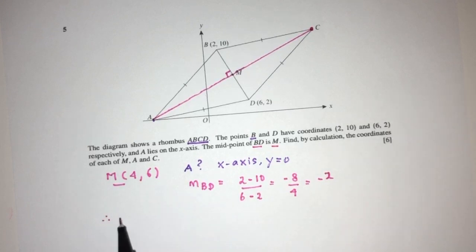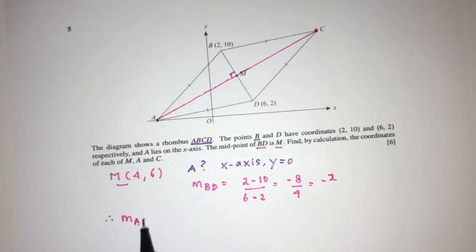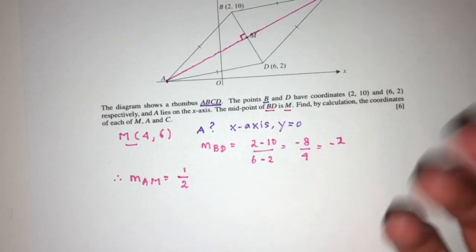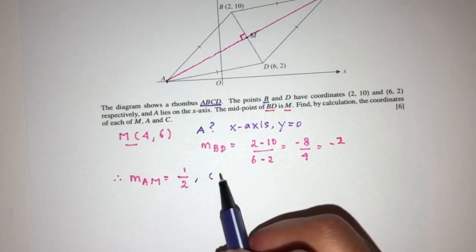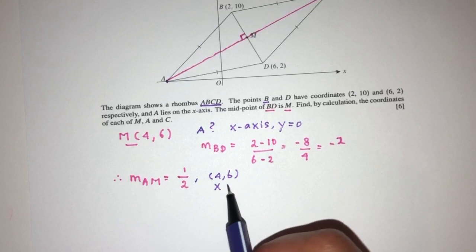From this, we can derive the gradient of A, M, will be the value of plus half. Now we have the gradient of A, M. We have the passing point of M, which is 4, 6. We can find the equation.